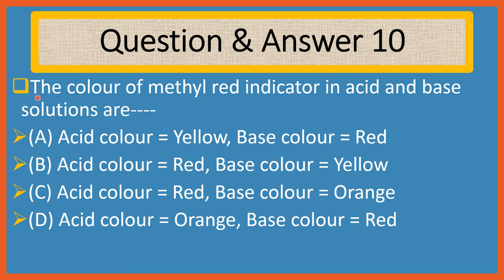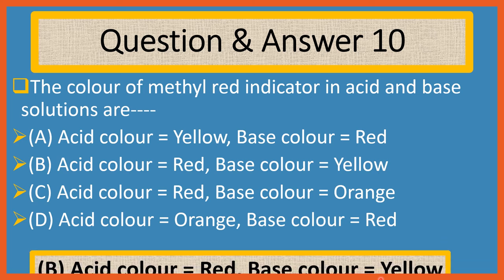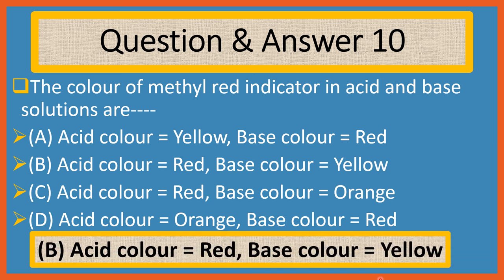Question 10. The color of the methyl orange indicator in acid and base solutions is. Choices are: A. acid color yellow, base color red. B. acid color red, base color yellow. C. acid color red, base color orange. D. acid color orange, base color red. Answer is B: acid color red, base color yellow.